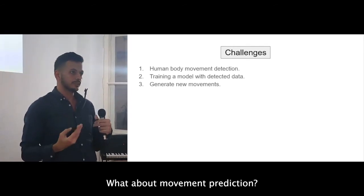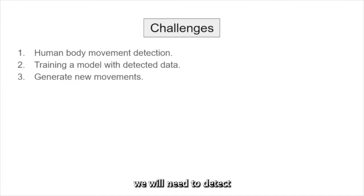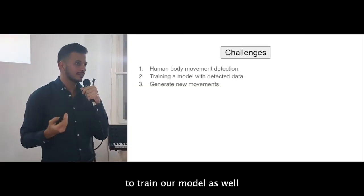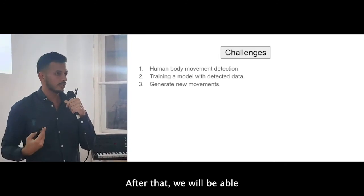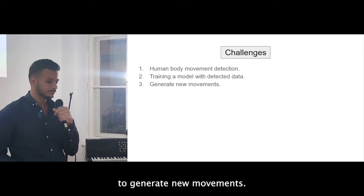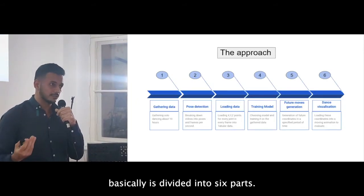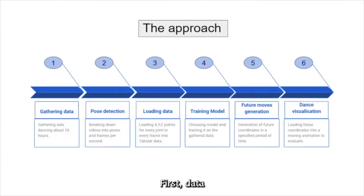What about movement prediction? In our case, we have some challenges. We will need to detect the movement of a person in a video to train our model as well on the detected data. After that, we will be able to generate new movements. So our approach basically is divided into six parts. First data, getting as much videos as we can of dances, and then pose detection, where we can detect the movement in this data. After that, loading the data into our training model, and then we can predict or generate new movements. And after that, we can visualize these movements into animation, if you wish.